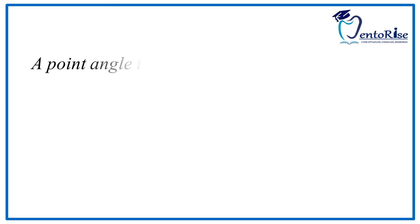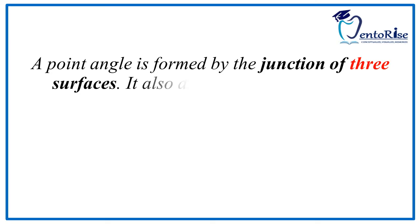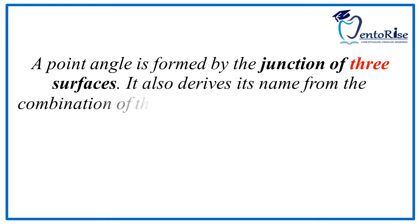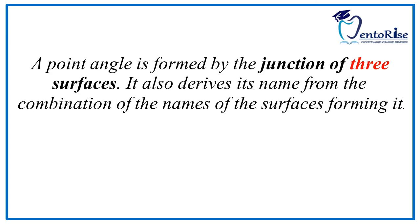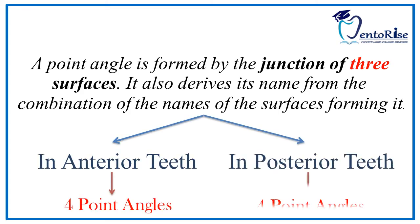So that covers all line angles of anterior and posterior teeth. To recall, a line angle is formed by the junction of two surfaces. On the other hand, a point angle is formed by the junction of three surfaces and also derives its name from the combination of names of surfaces forming it. In anterior teeth we have four point angles, and in the posterior teeth we also have four point angles.